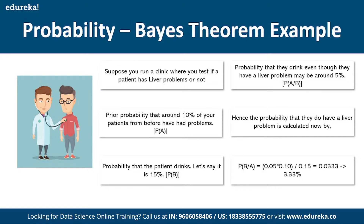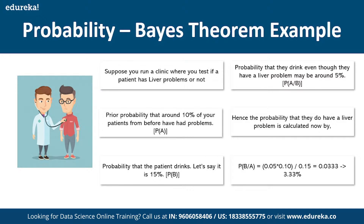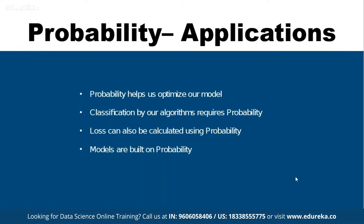A practical application of Bayes' theorem: suppose you run a clinic and want to determine if a patient has liver problems. Say 10% of patients previously had liver problems — that's P(A). The probability a patient drinks is 15% — P(B). The probability they drink given they have a liver problem is 5% — P(A|B). So P(B|A) = (0.05 × 0.10) / 0.15, giving approximately 3.33% chance of having liver problems.